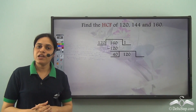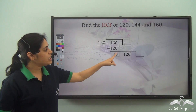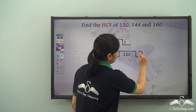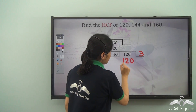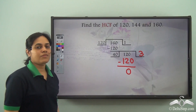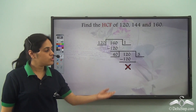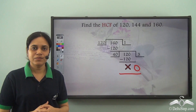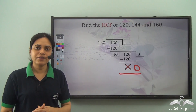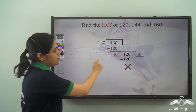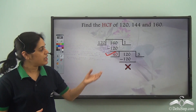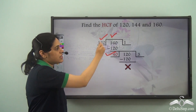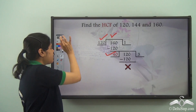So 40 will now divide 120. 40 goes into 120 three times. 40 into 3 is 120, and I get the remainder 0. This cross marks 0 remainder — no remainder — which means I need to stop here. So 40, which is the divisor of the last step, is the HCF of 120 and 160.